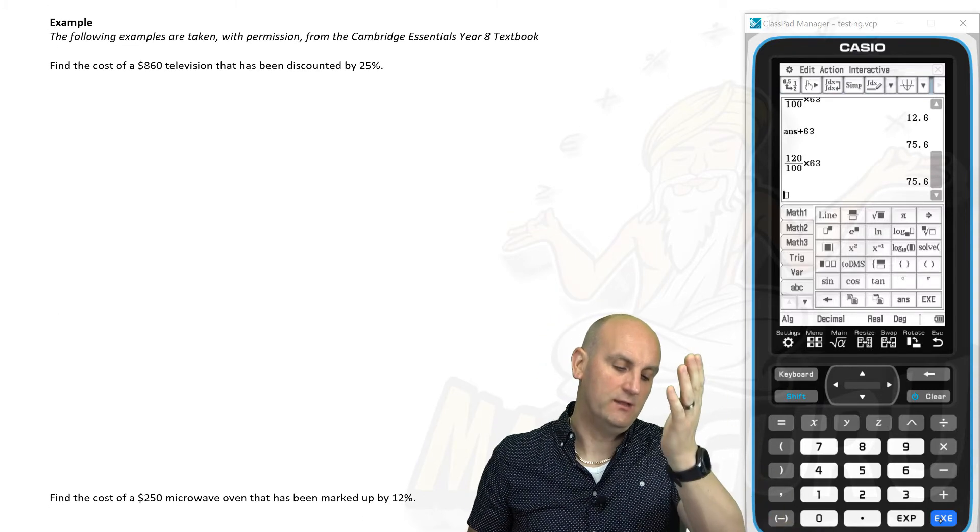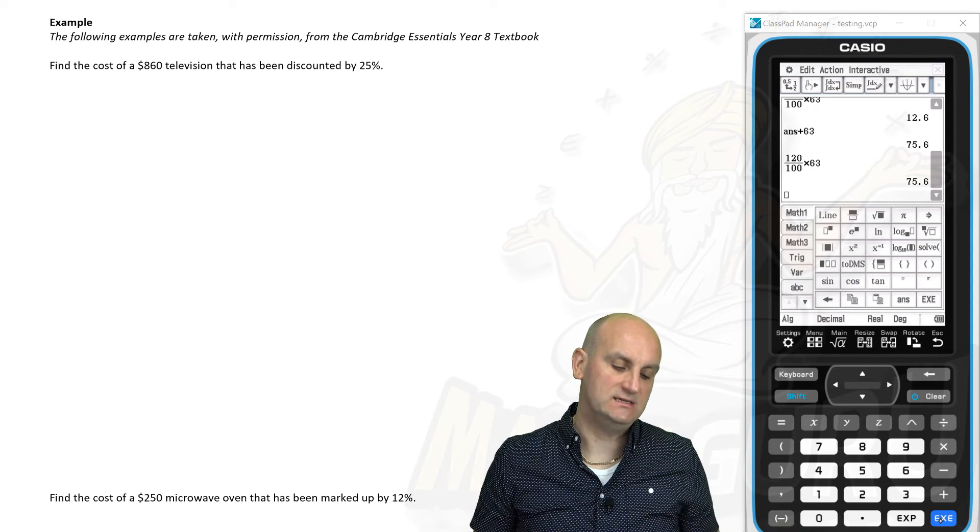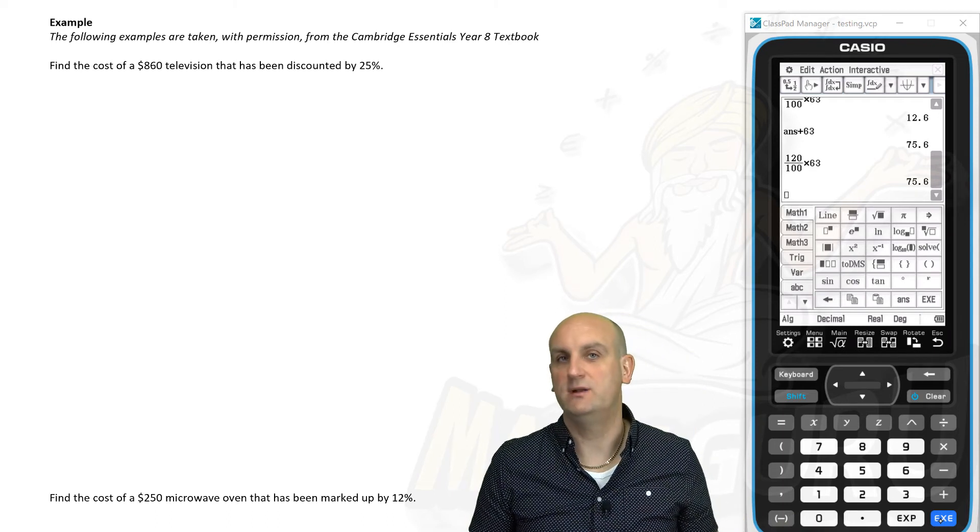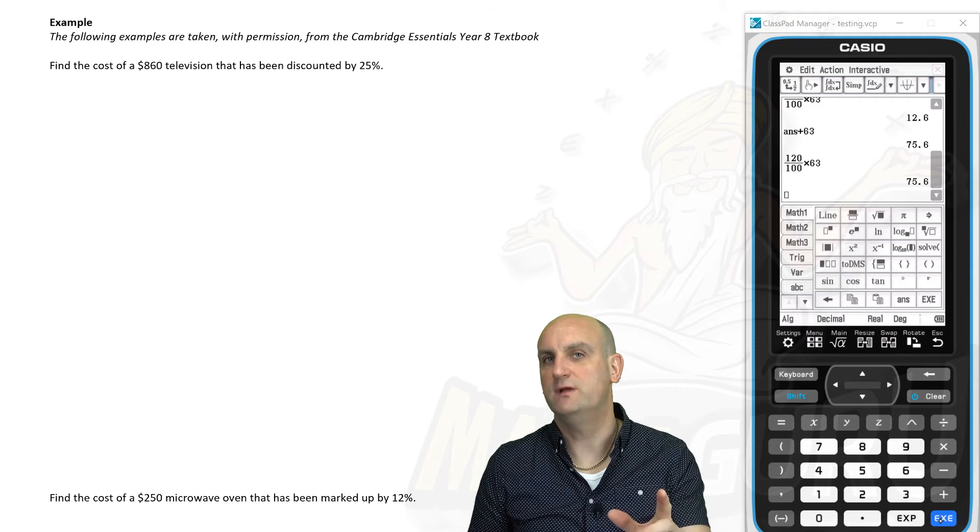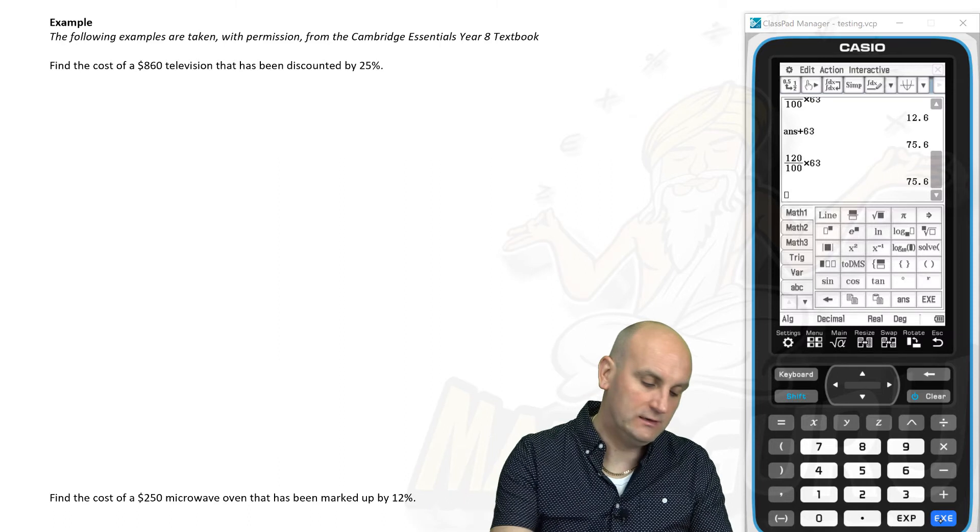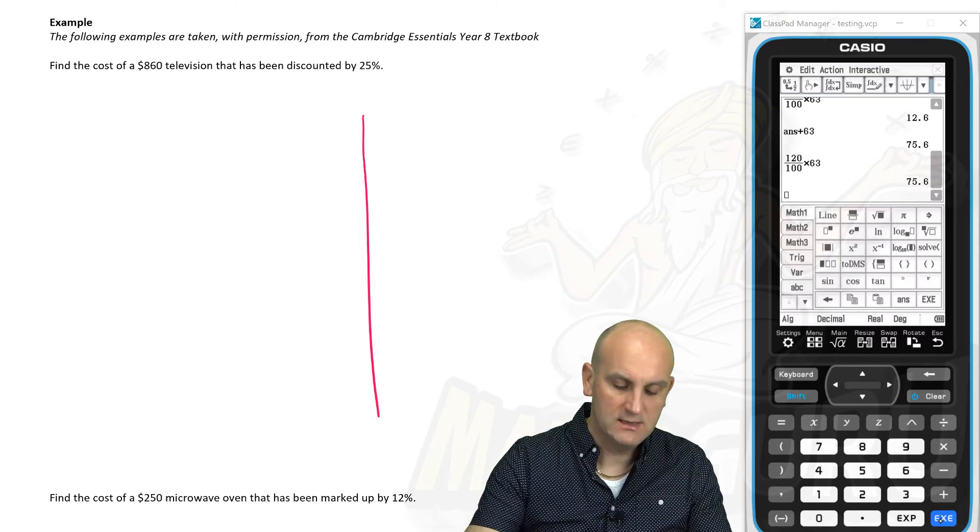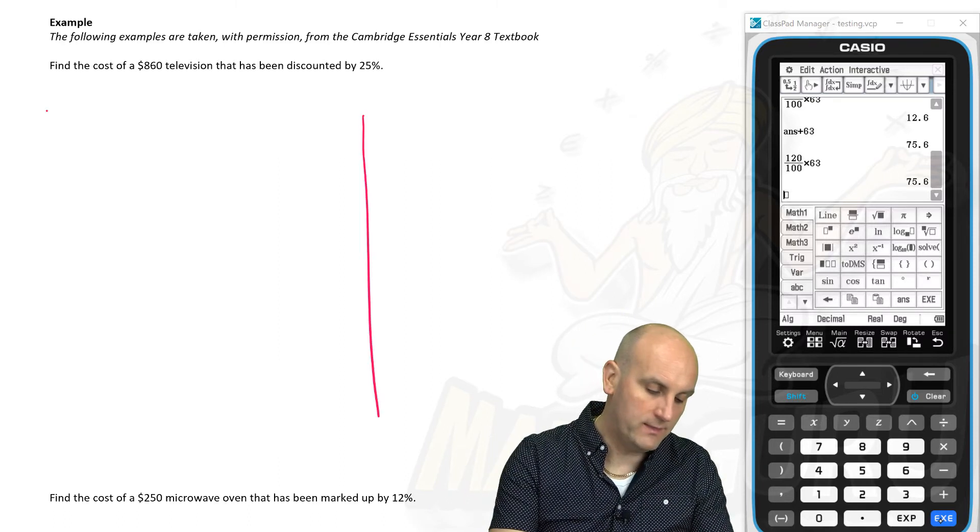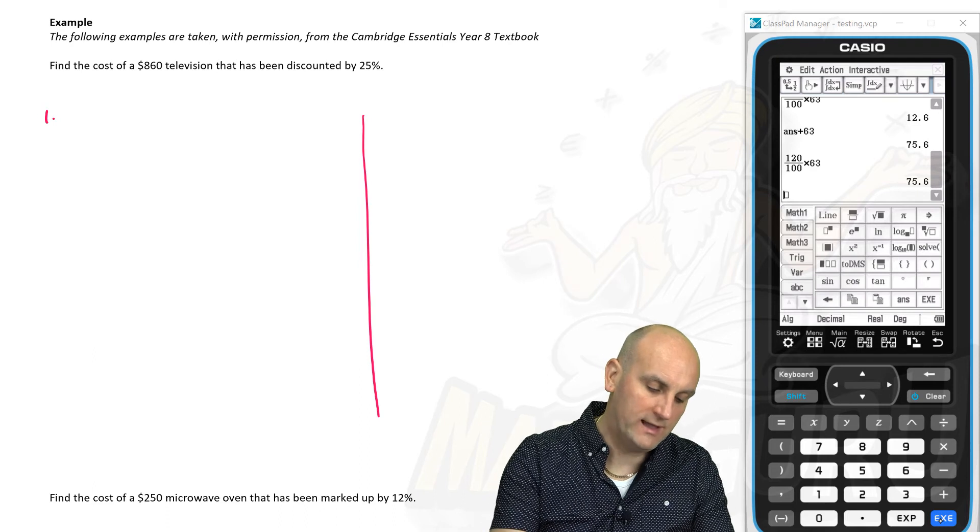But find the cost of an $860 television that's been discounted by 25%. Now, each of the examples we've done has basically been the same. We've increased. Now we've got a decrease question. Let's do it both ways to see what happens.